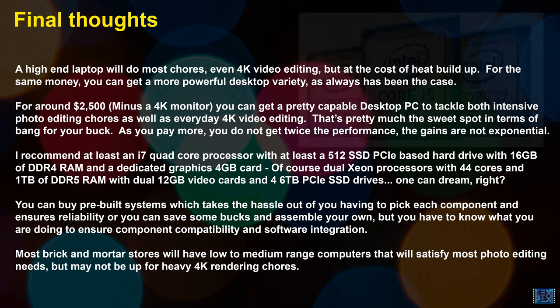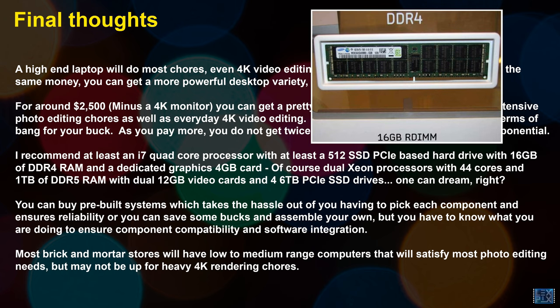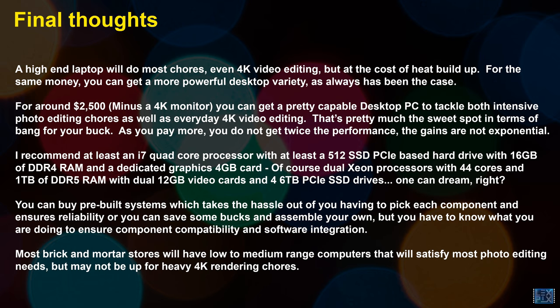I recommend at least an i7 quad-core processor, at least a 512GB PCIe-based SSD, 16GB of DDR4 RAM, and a dedicated graphics card with 4GB of onboard memory. Of course a dual Xeon processor with 44 cores, 1TB of DDR5 RAM, dual 12GB video cards, and four 6TB PCIe SSDs would be awesome — one can only dream. You can buy pre-built systems, which takes the hassle out of picking and installing components and ensures reliability, or you can save money and assemble your own — but you need to know the hardware and software compatibility. Most brick-and-mortar stores like Best Buy will have low-to-medium range computers that'll satisfy most photo editing needs.